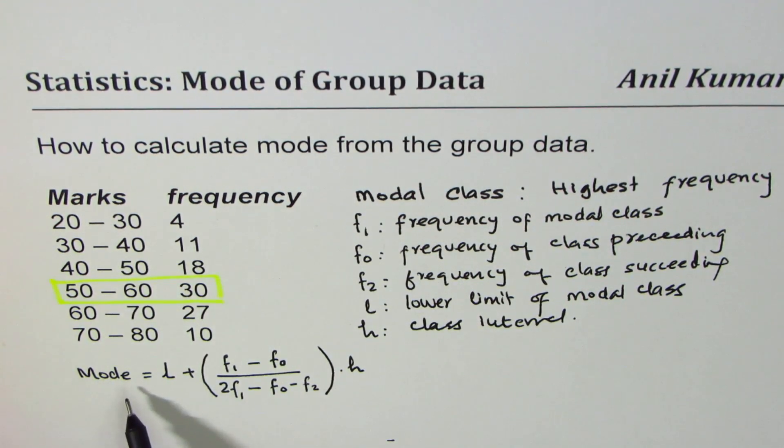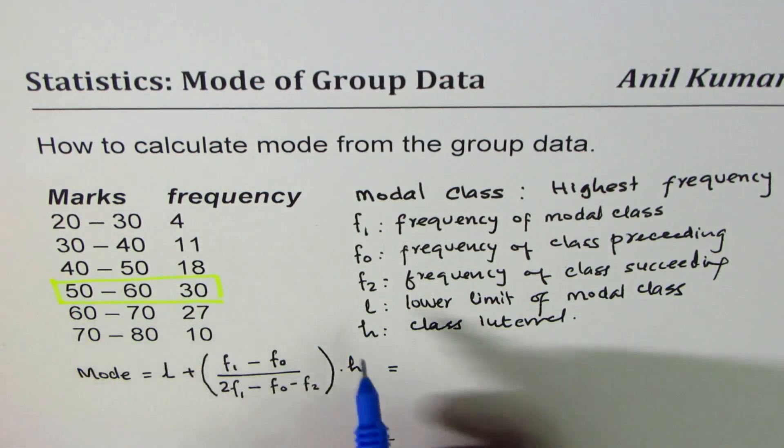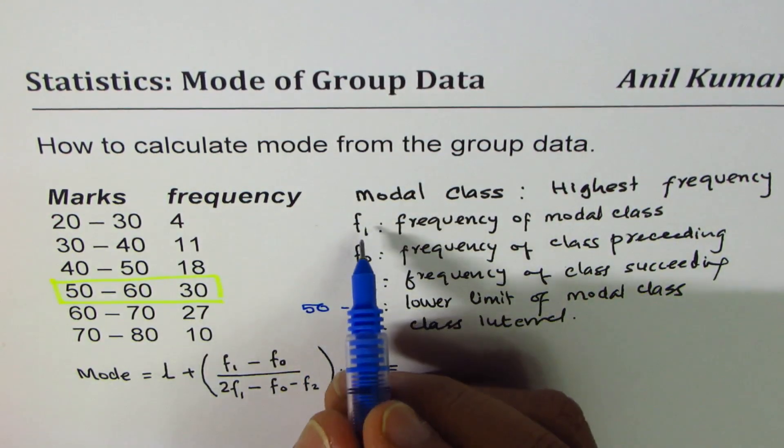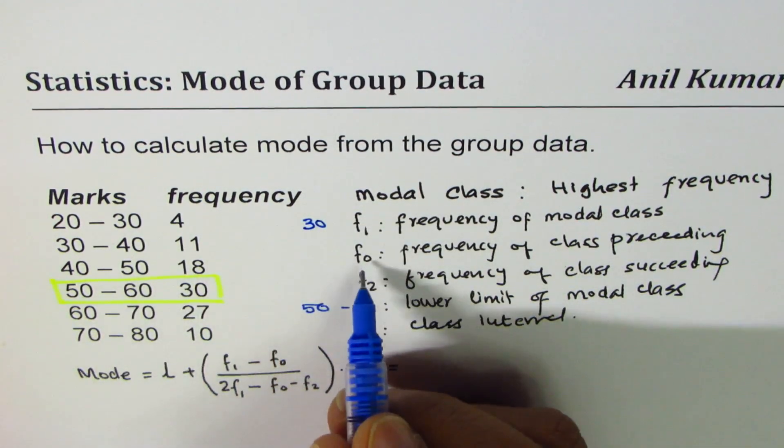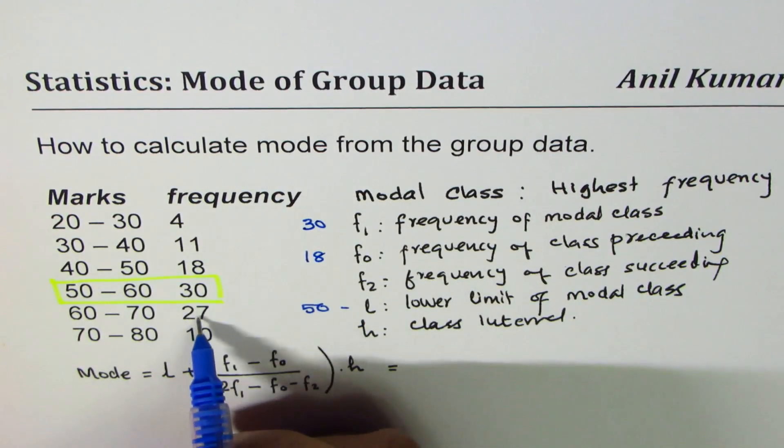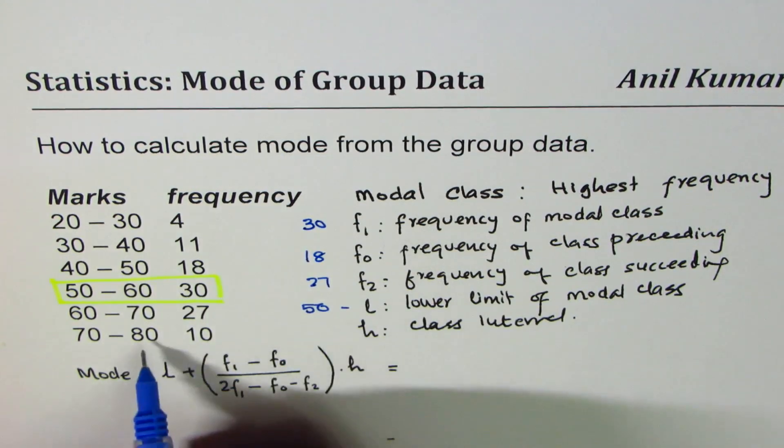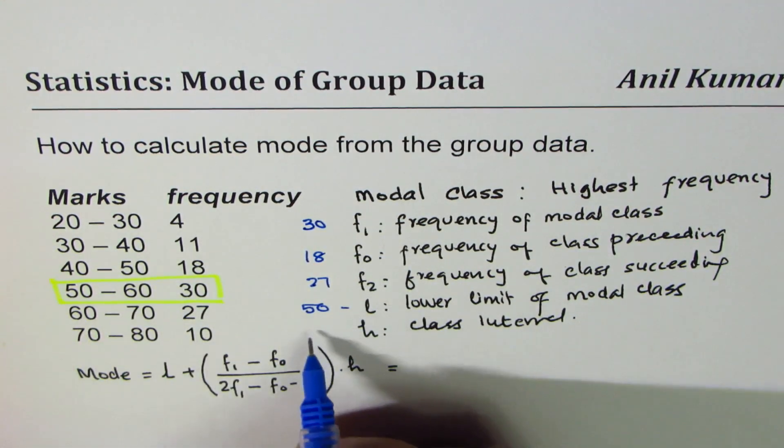Remember this is just an estimate. So L in our case is 50. Let's start from here: frequency for the modal class is 30, f0 frequency before that is 18, the frequency after modal class is 27, the class interval is 70 minus 60 or 60 minus 50 which is 10.